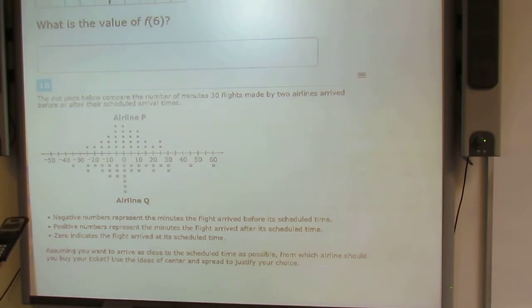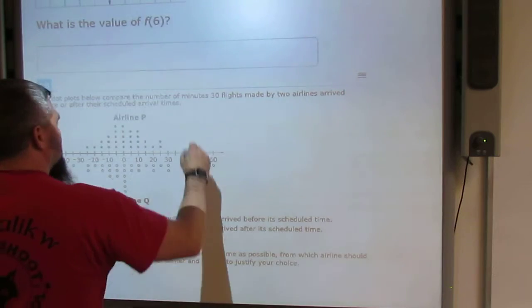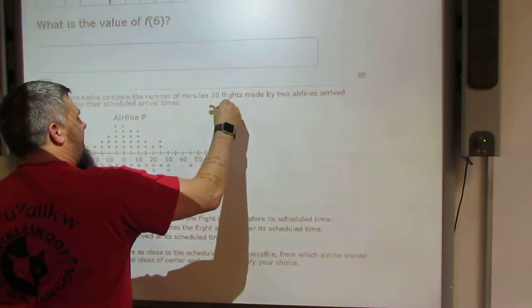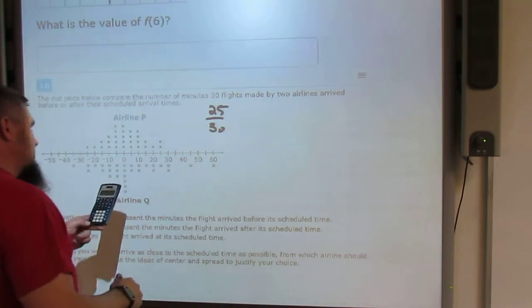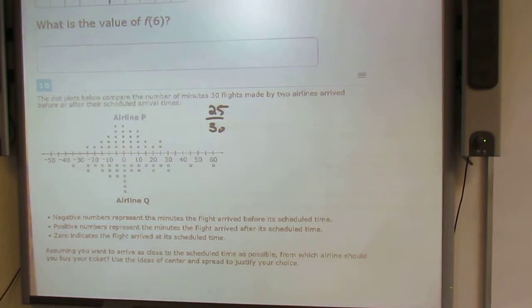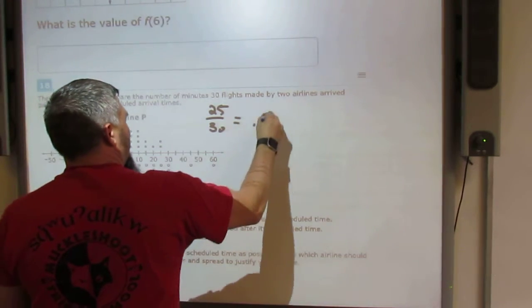It equals, and I get 25. So I have 25 divided by 30, and that equals 0.83.